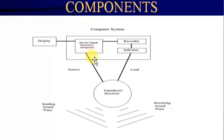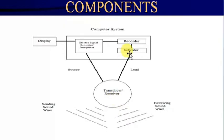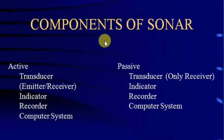Here is the block diagram of SONAR components. An electric signal is generated and converted into sound waves, which are transmitted by a transducer. When these waves hit any object they rebound, are received by the transducer again, converted back into electric signals, amplified, and displayed. This allows the position, speed, and direction of a moving object to be detected.